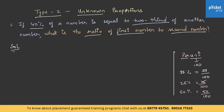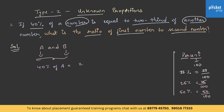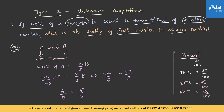Now let us solve this question. Taking the two numbers as A and B, if 40 percent of A is equal to two-thirds of B, we can write: 40 by 100 into A is equal to 2 by 3 of B. This becomes 2A by 5 is equal to 2B by 3, and from this A by B becomes 5 by 3, that is A is to B is equal to 5 is to 3. This is the ratio of the first number to the second number.